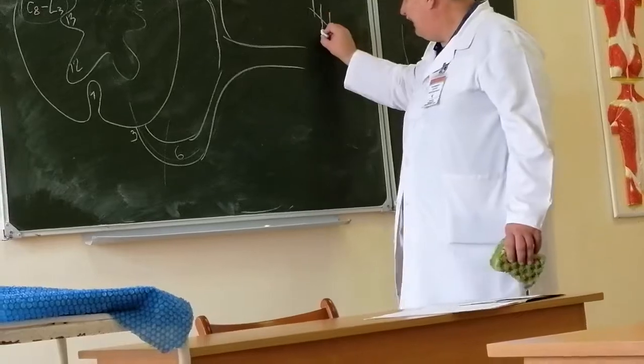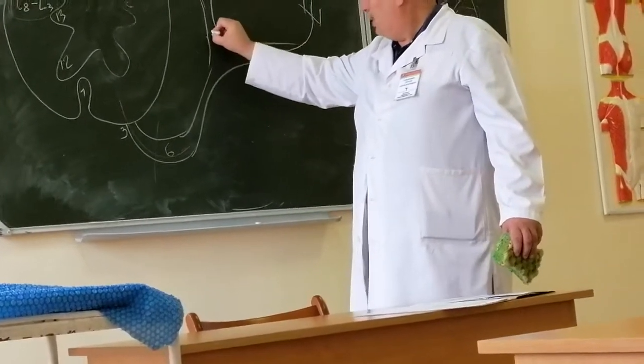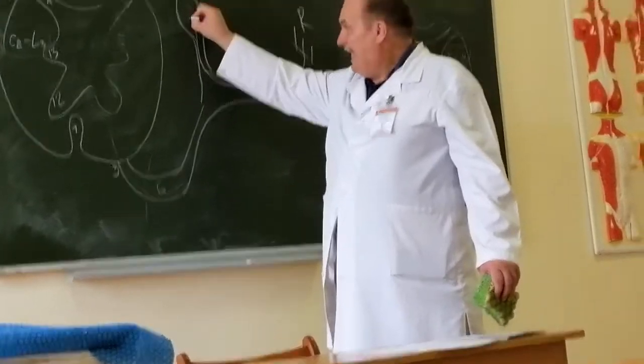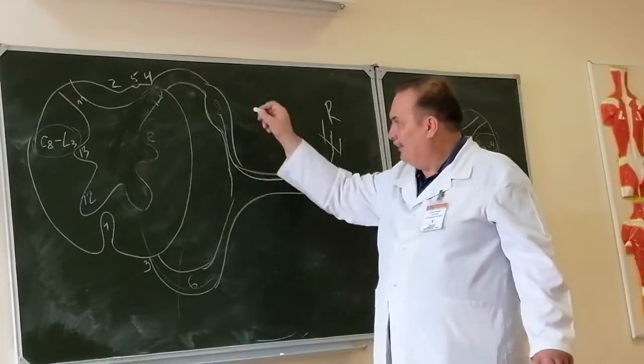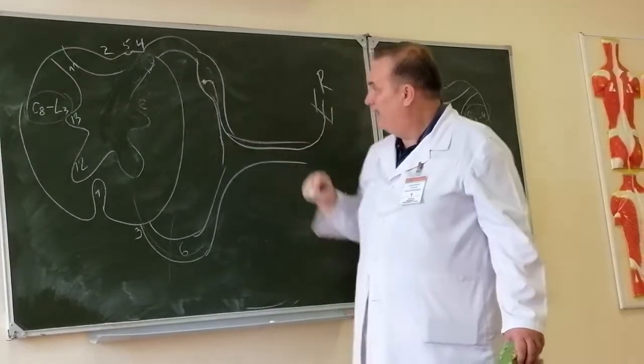This impulse passes through spinal nerve, goes to posterior root, and in posterior root we have spinal ganglion. In spinal ganglion we have neuron.